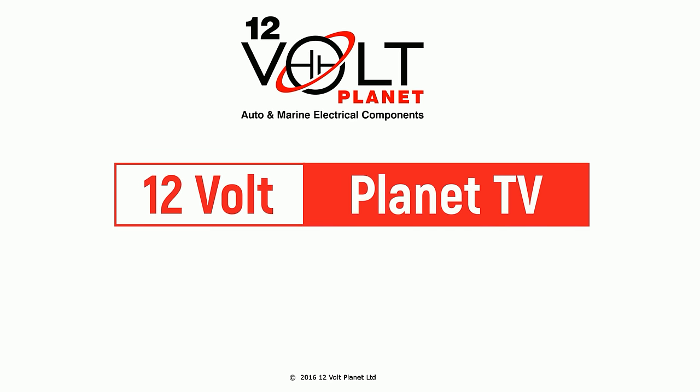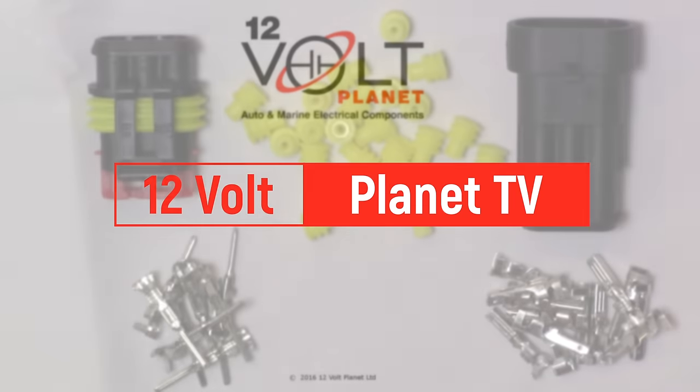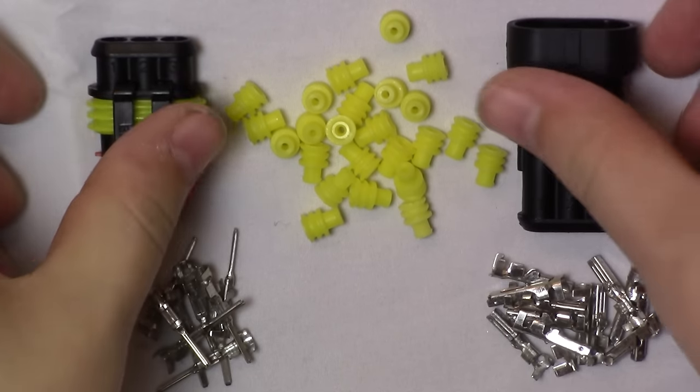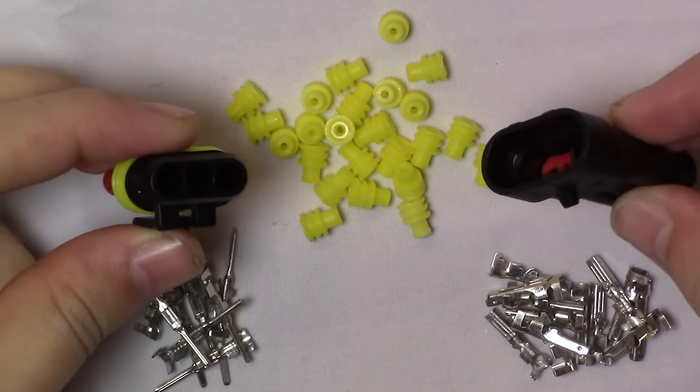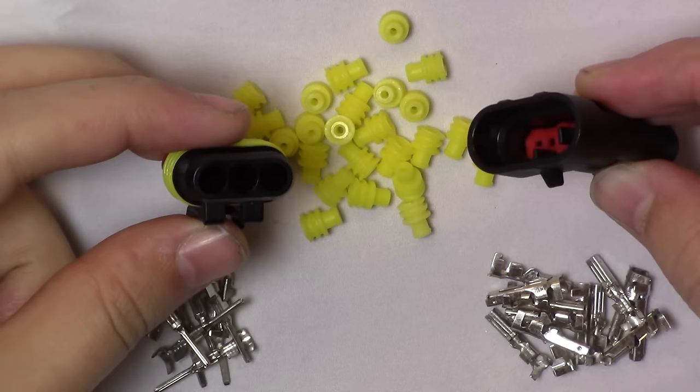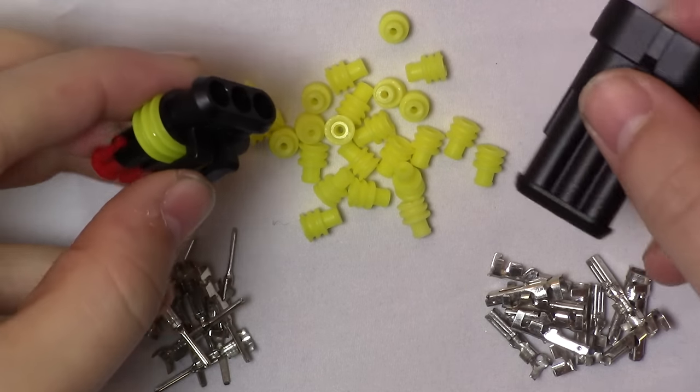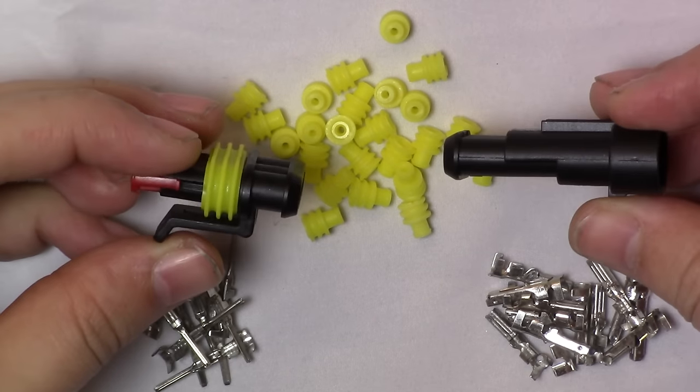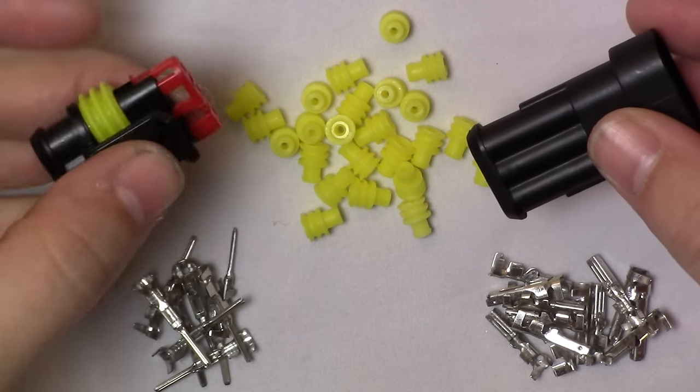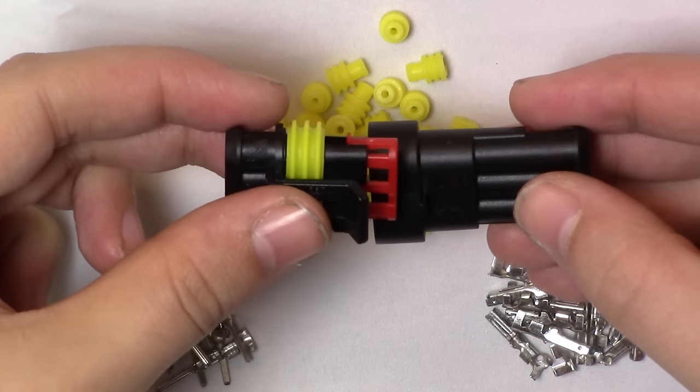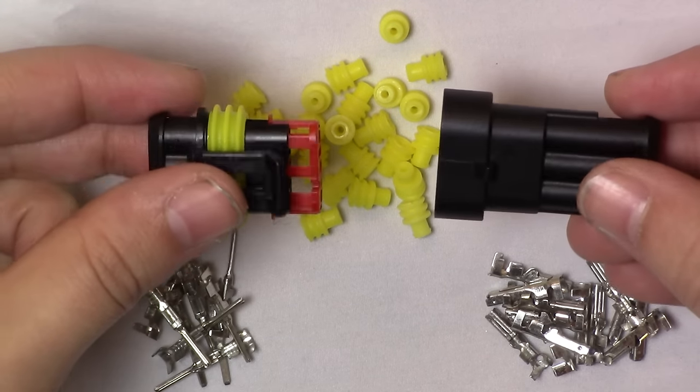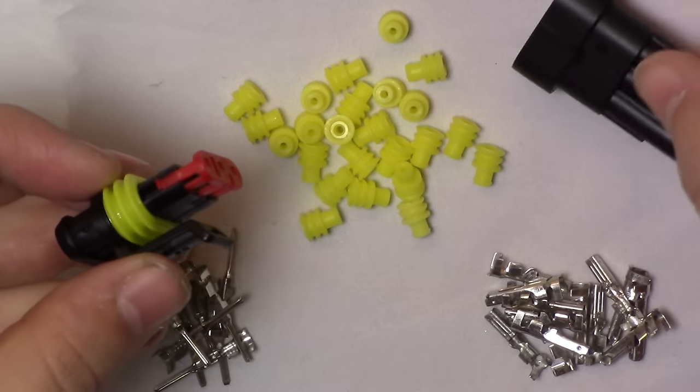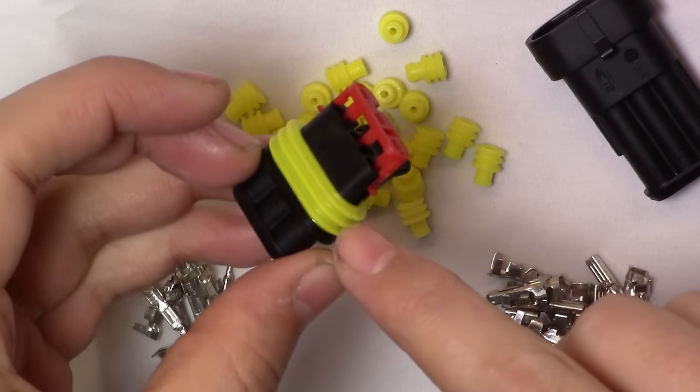Hello and welcome to 12 Volt Planet TV. My name is Craig, and today we will be discussing our super seal connectors. As you can see here, the super seal connectors come with two housings. Here you can see our three-way. They do come in different types, all of which you'll find on our website. The link will be in the description below. These can be a bit tricky to assemble, so we're going to go through this together and show you.